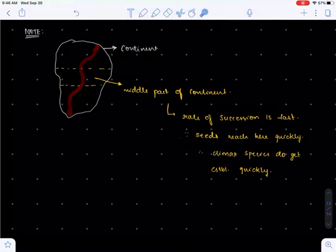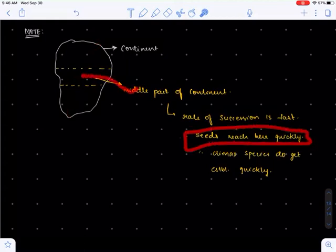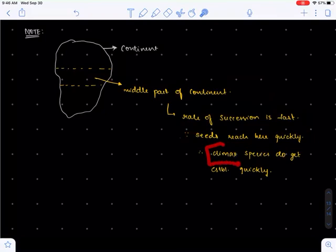This bird brings seeds along with it. Before it reaches the other side of the continent, it drops some seeds somewhere in the middle part. Hence, seeds reach the middle part of the continent quickly.